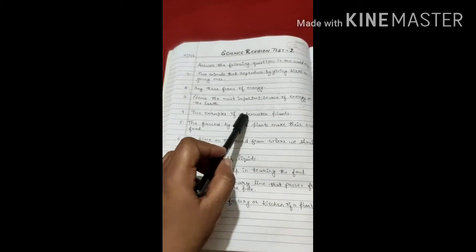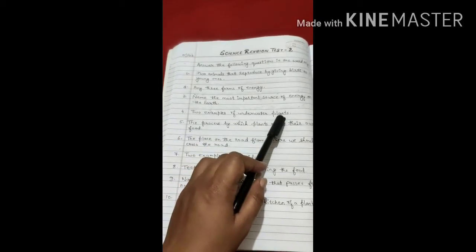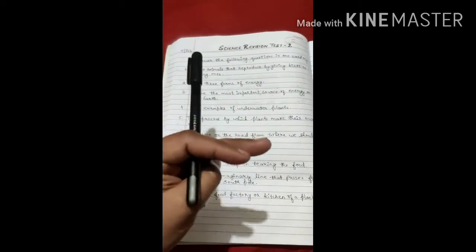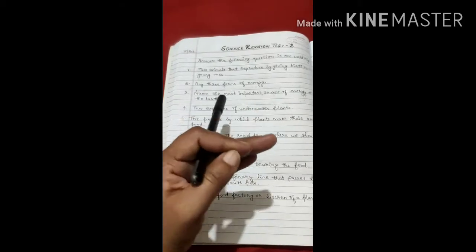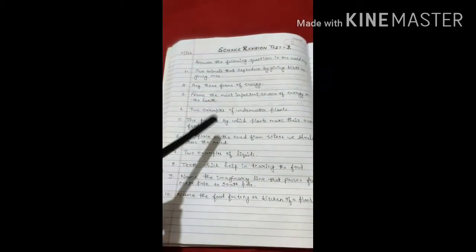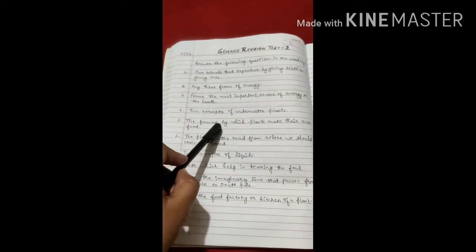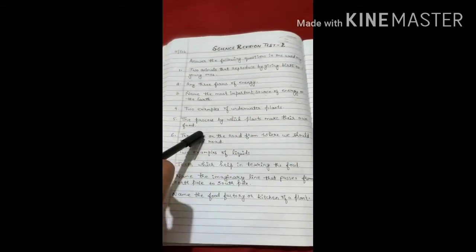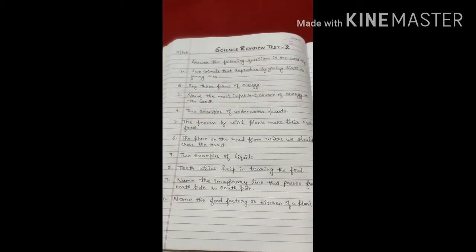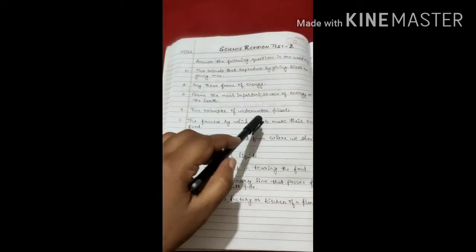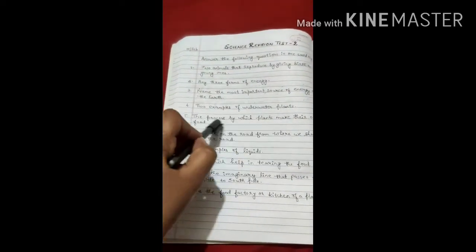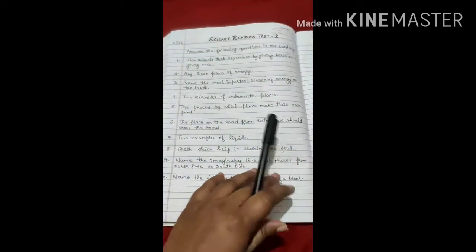Two examples of underwater plants — give two examples of underwater plants. The process by which plants make their own food — you have to name that process.